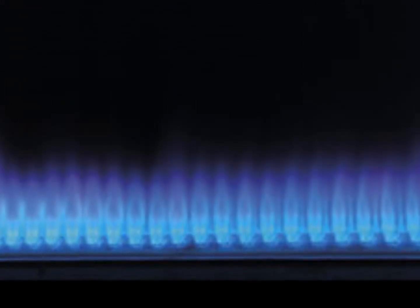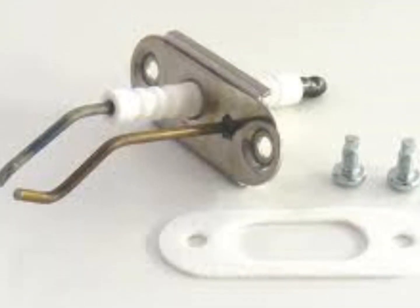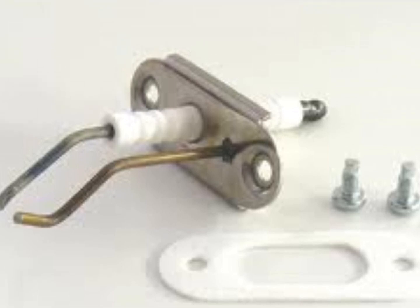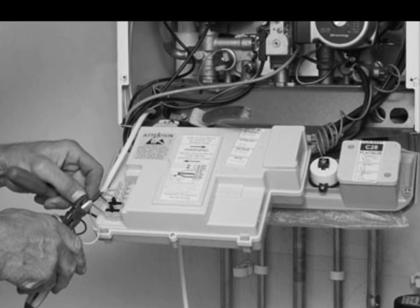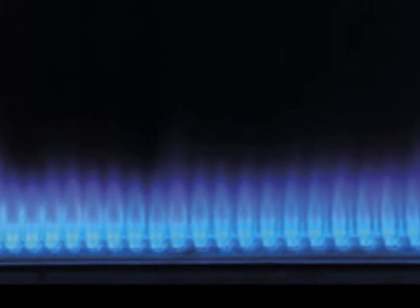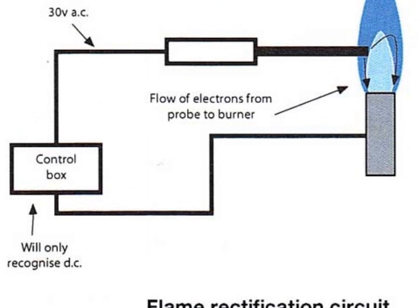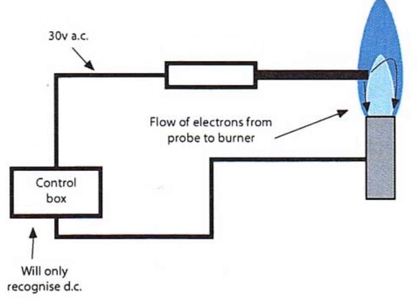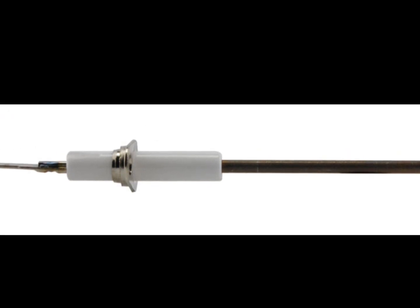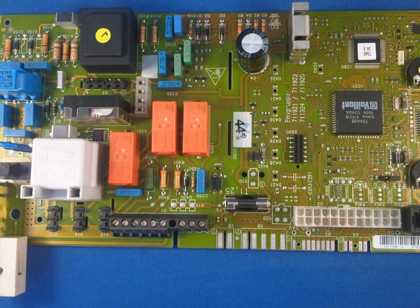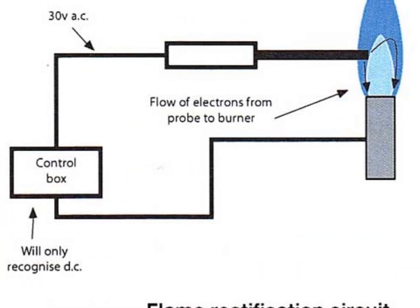There's then an ignition probe, like a spark plug, which starts trying to light. Once that lights it, you've got a flame. Once the flame occurs, you've got another device called a flame rectification device — essentially just a probe. When the flame hits it, it generates a small current which goes back to the PCB, telling the PCB to keep the gas valve open. If it's not detecting any current, it's going to shut off, because we don't want the boiler filling up with gas.